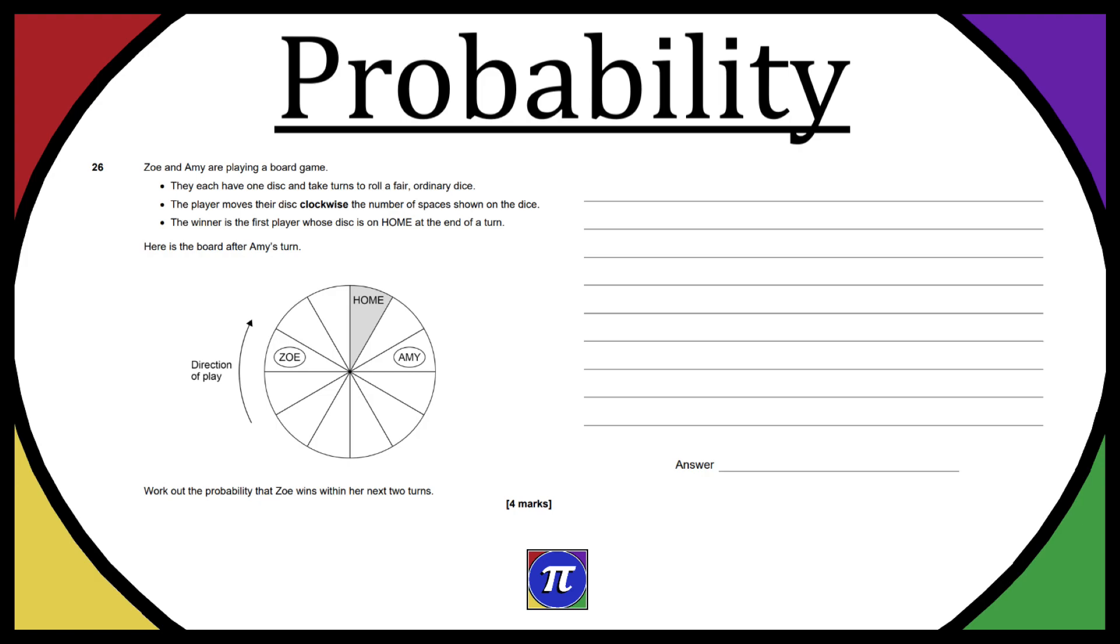The player moves their disc clockwise the number of spaces shown on the dice. The winner is the first player whose disc is on home at the end of a turn. Here is the board after Amy's turn and we can see the direction of play which is clockwise, we can see Amy and Zoe's markers and we can also see the home. It says work out the probability that Zoe wins within her next two turns.